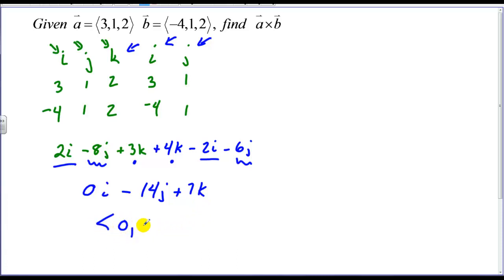How do I know that this vector, which is 0, negative 14, and 7, is perpendicular to either one of these two? Well, I can simply take and do a dot product. If I go, let's call this a cross b, a cross b dot vector a should equal 0 if they're perpendicular. So, I take product of the x's, which is 0 times 3, product of the y's, which is 1 times negative 14, and the product of the k's, which is 2 times 7, add them all up and hopefully I get 0. And I do. So, that is perpendicular. And I could do the same with the b vector and end up with a product of 0 as well.